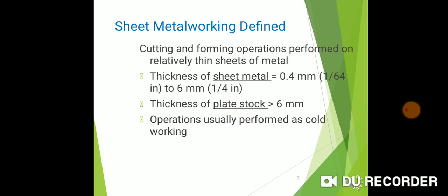Sheet metal working is defined as the cutting and forming operations performed on relatively thin sheets of metal. Thickness of the metal is 1/64 inch to 6mm, and thickness of plate greater than 6mm. Operations are usually performed as cold working process. Sheet metal process is cold working because it works at room temperature and pressure.